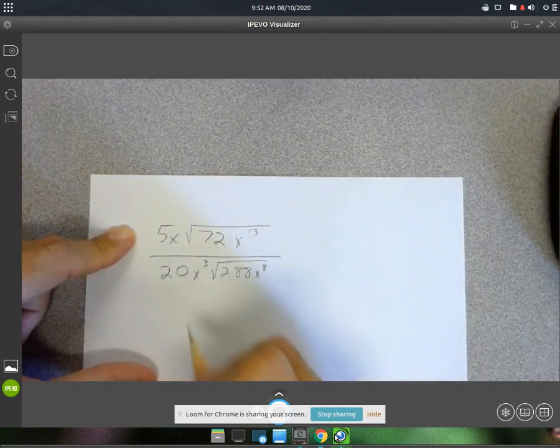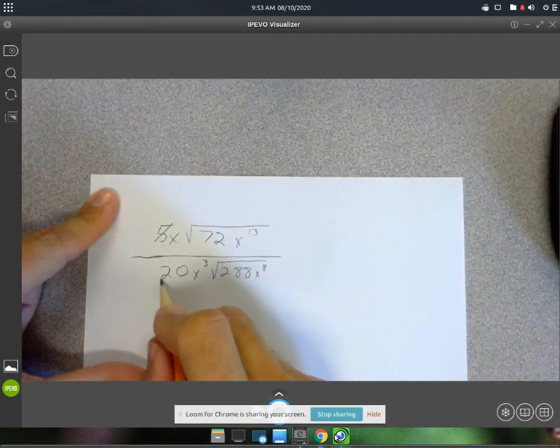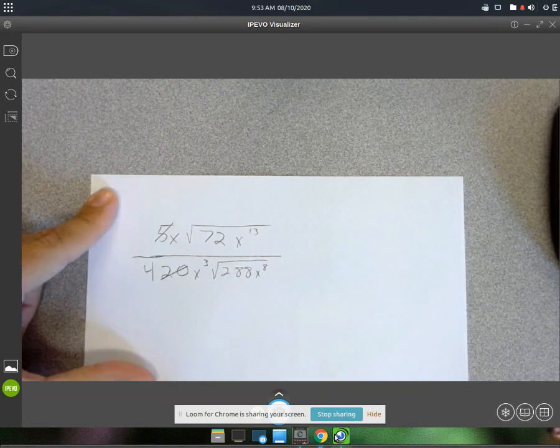I know 5 and 20, you can divide both by 5, so this one cancels and this one becomes a 4.